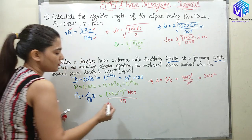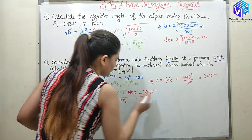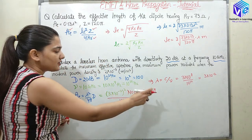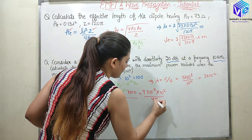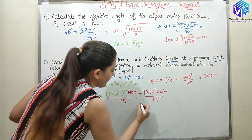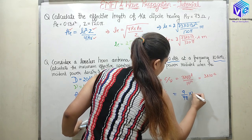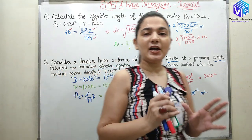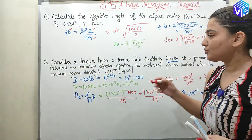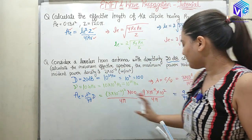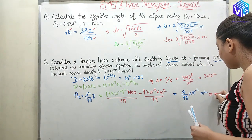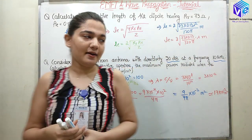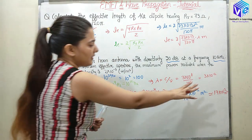Continuing the calculation: (3 × 10⁻²)² = 9 × 10⁻⁴. So Ae = 9 × 10⁻⁴ × 100 / (4π) = 9 × 10⁻² / (4π) = 9 / (4π) × 10⁻² m². This comes out to approximately 1.7 × 10⁻³ m². Now we know the effective aperture area of the antenna.